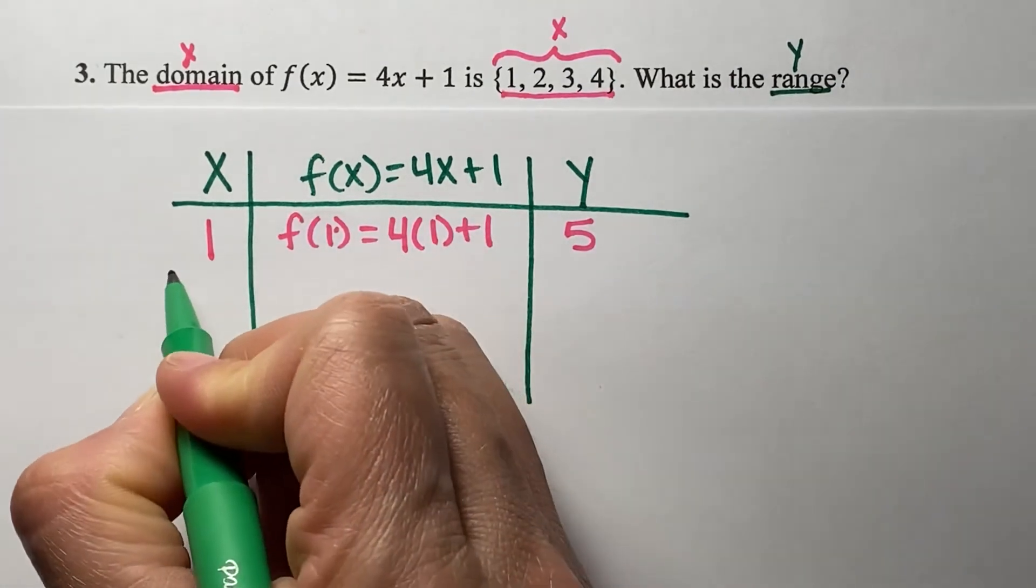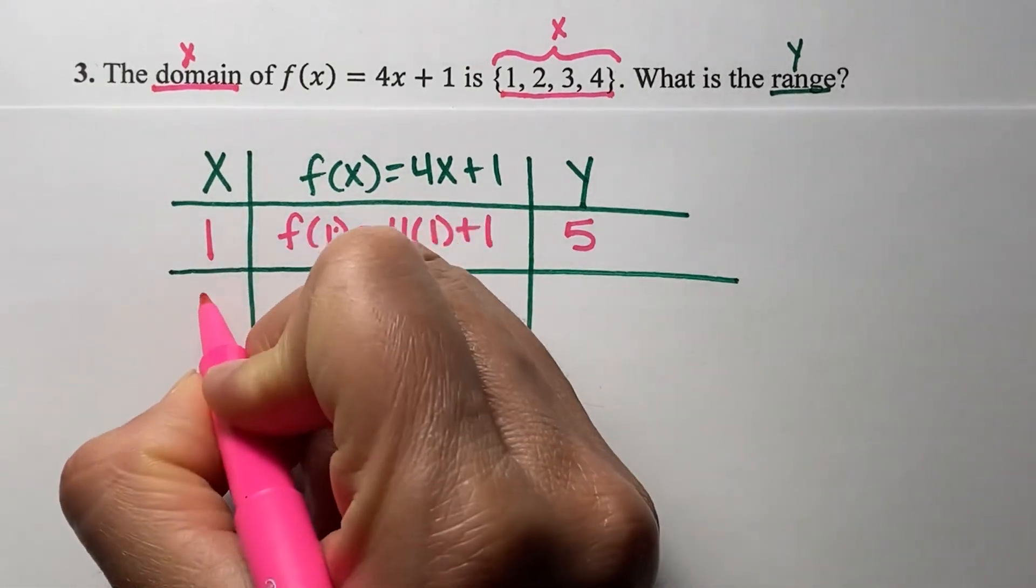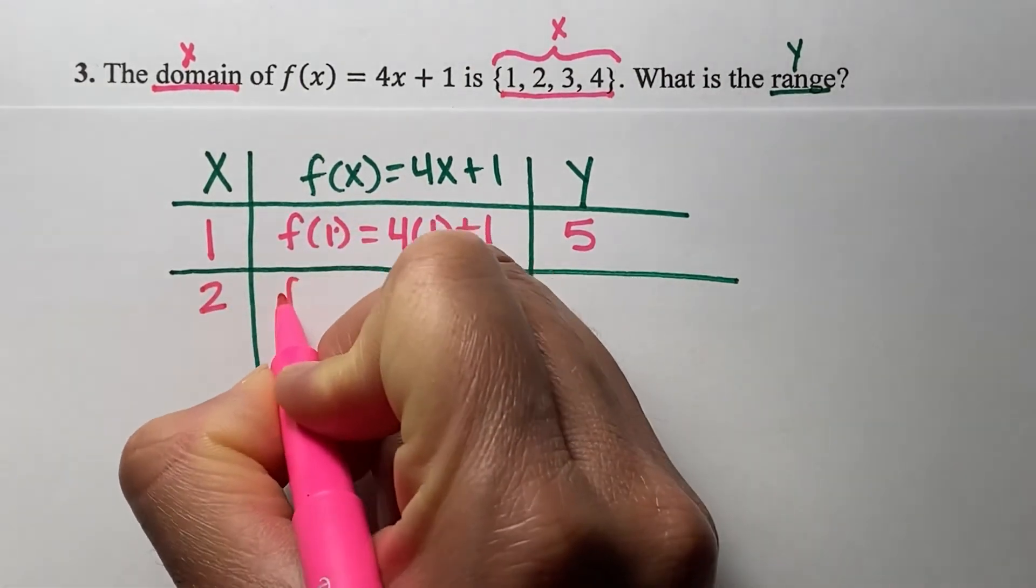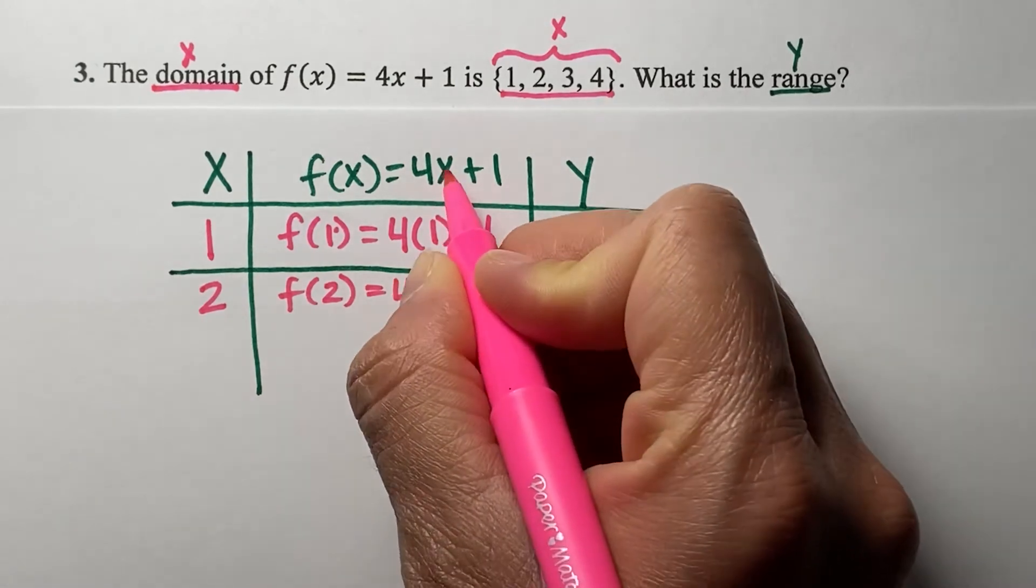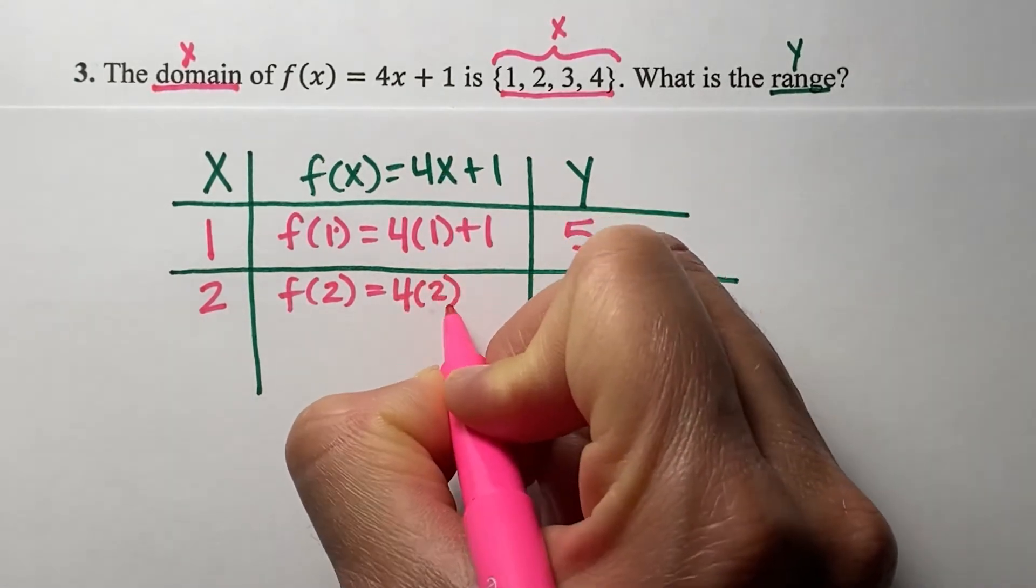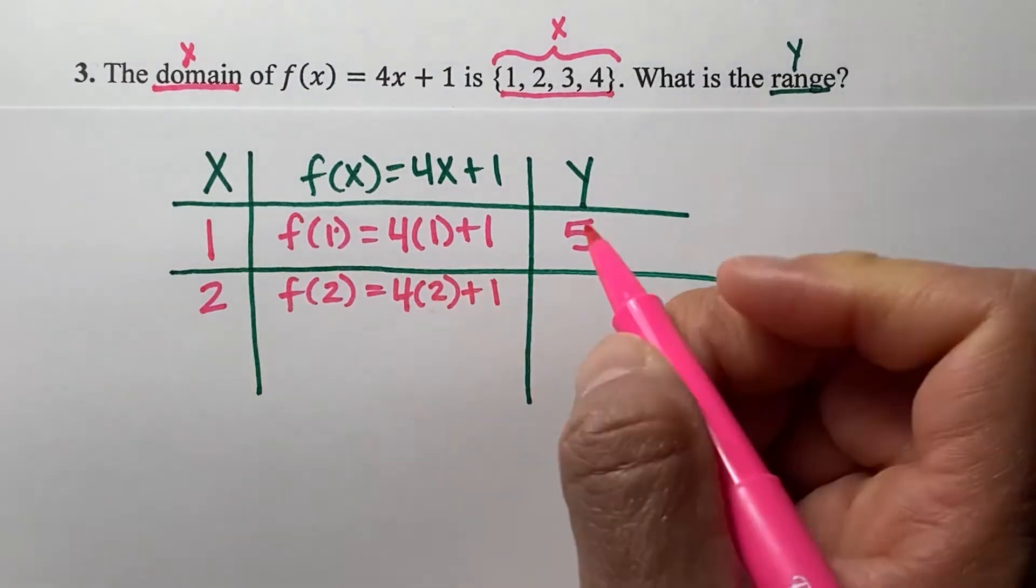Now, I will do the same thing for 2. When I have 2 for x, f(2) = 4 times 2 plus 1. 4 times 2 is 8 plus 1 is 9.